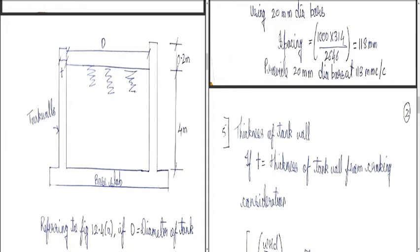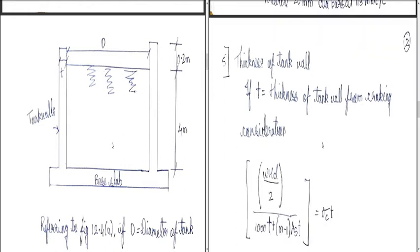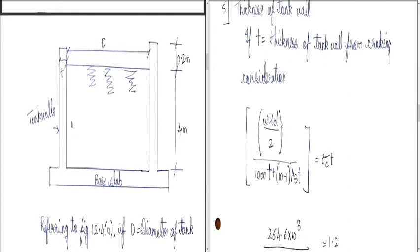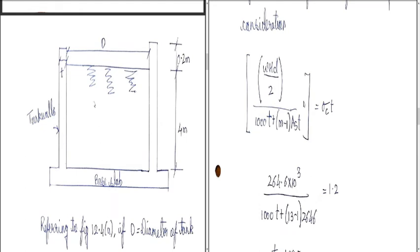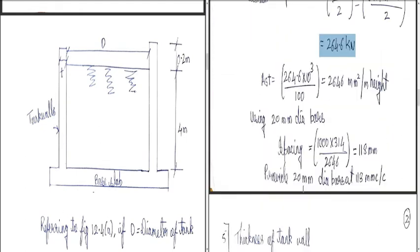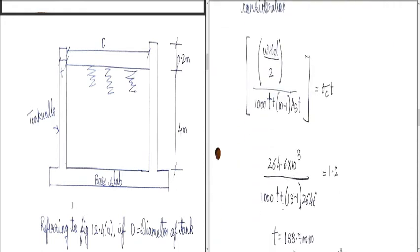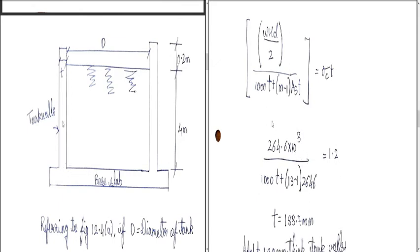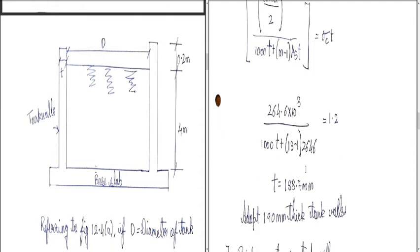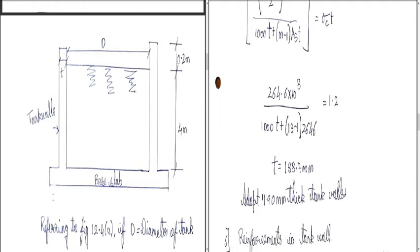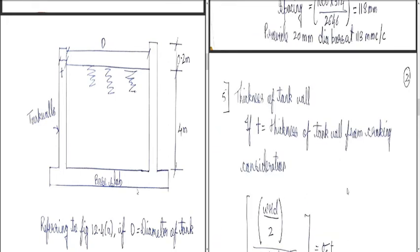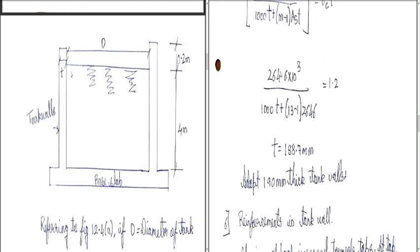Next we determine the thickness of the tank wall. If t is the wall thickness, from cracking consideration the formula is: T / (1000t + (m−1)×Ast) = σct. Substituting: 264.6 × 10³ / (1000t + (13−1) × 2646) = 1.2. Solving, t = 188.7 mm. Adopt 190 mm thick tank wall.